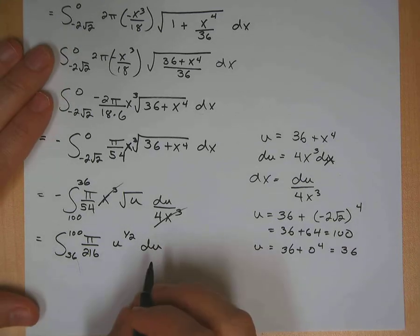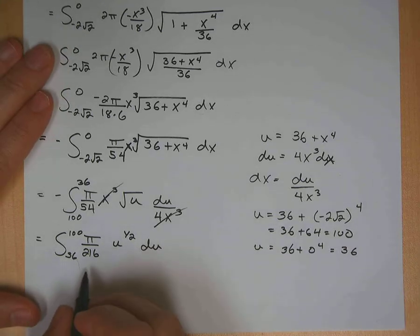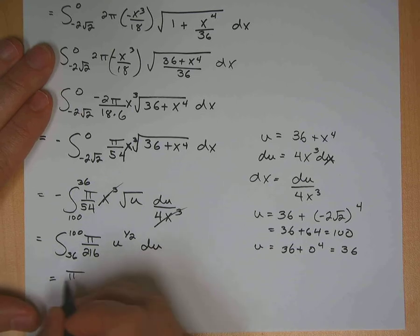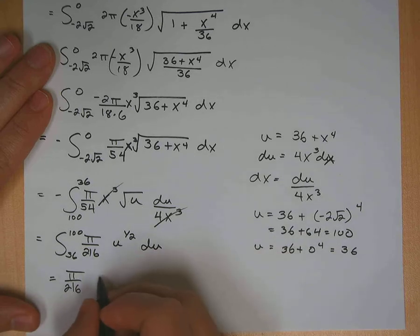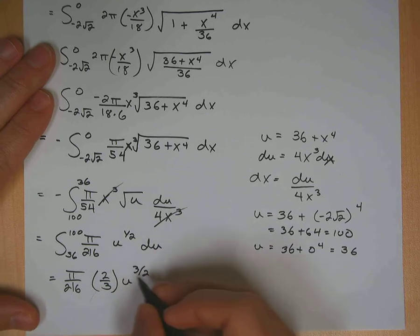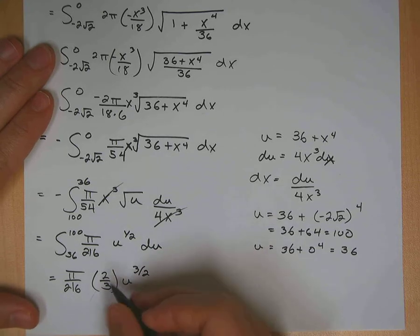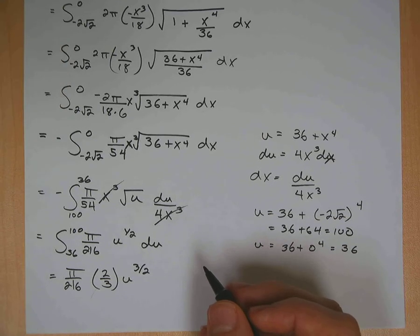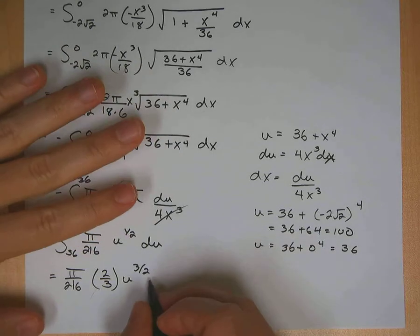Okay. Now I'm ready to actually take the integral here. So u to the 1/2 becomes u to the 3/2 divided by 3/2. So this is pi over 216. It's going to be 2/3 times u to the 3/2. The 3/2 was in the denominator. I flipped it and made it 2/3. Okay. If we do that, let's see. We're going to get pi over 324.